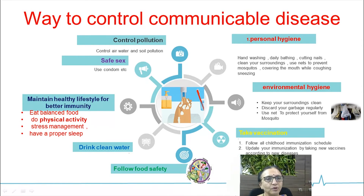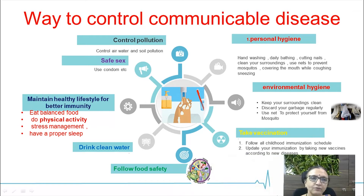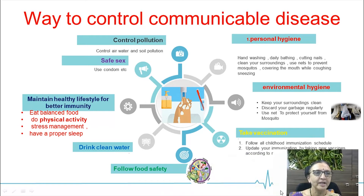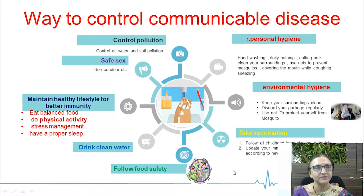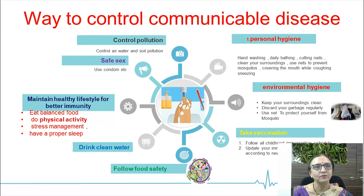Follow food safety, drink clean water, maintain a healthy lifestyle for better immunity by eating a balanced diet, doing routine physical activity, stress management, and having proper sleep. Also practice safe sex and control pollution — air, water, and soil pollution. These are the ways to control communicable diseases.